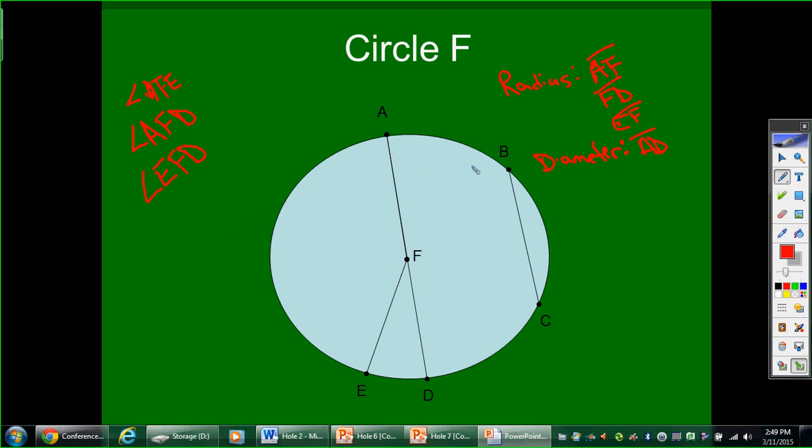A chord is any segment that goes from one edge of the circle to the other edge of the circle. In this case, I would have chord BC. I would also have a special type of chord that is the diameter, chord AD. So a diameter is a type of chord, but not all chords are diameters, which you can see with chord BC.